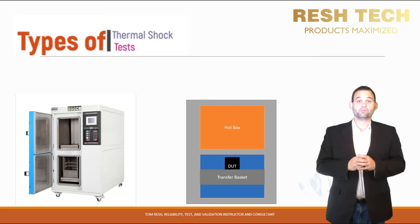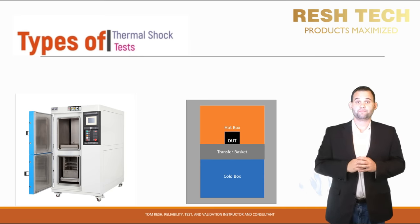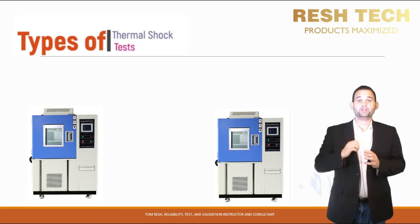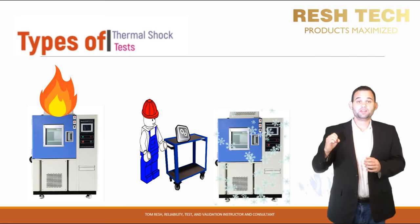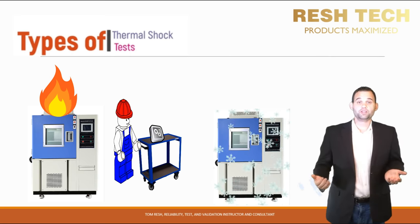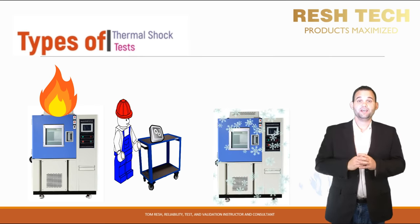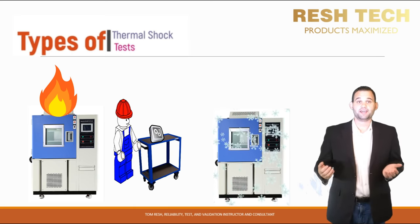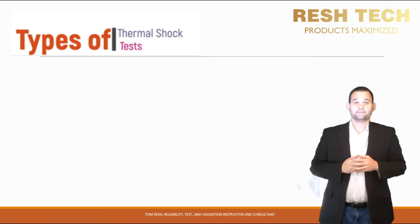Thermal shock chambers are more expensive than traditional temperature test chambers and, depending on the size of the part or system you are testing, can be very expensive. Another solution is to use two temperature test chambers — condition one to your hot temperature set point and the other to your cold temperature set point — and then manually transfer your part or system between the two after a specified soak period. The downside is you will need to run multiple shifts with technicians or engineers on day and night shifts depending on your soak periods and number of cycles.